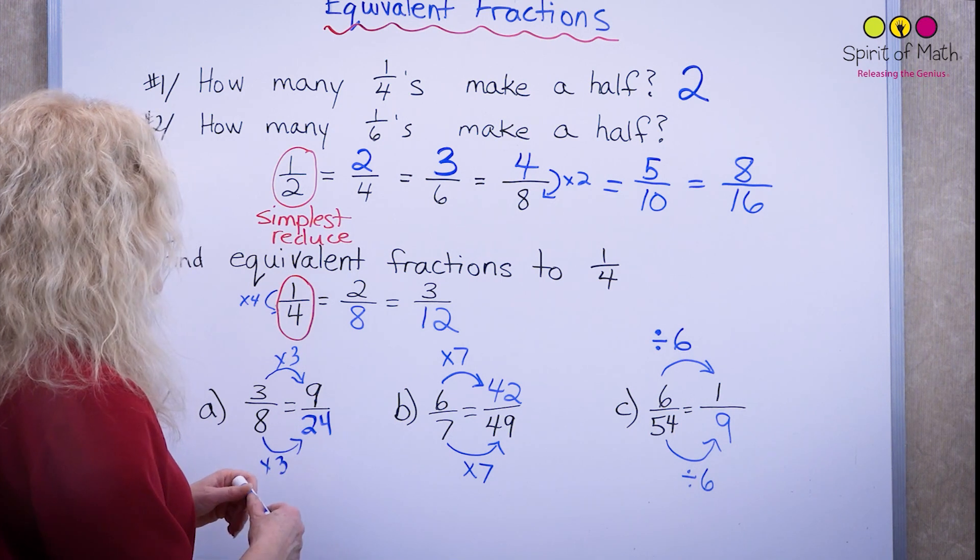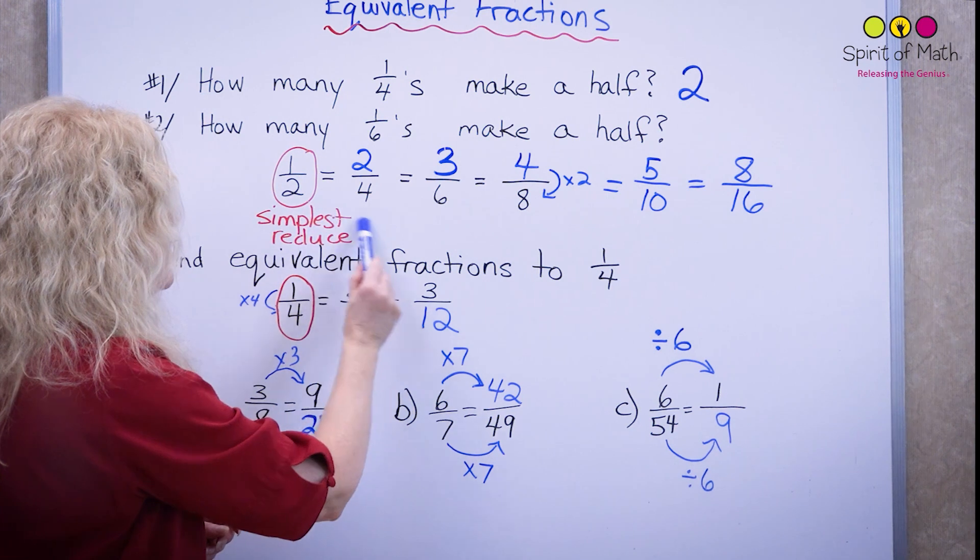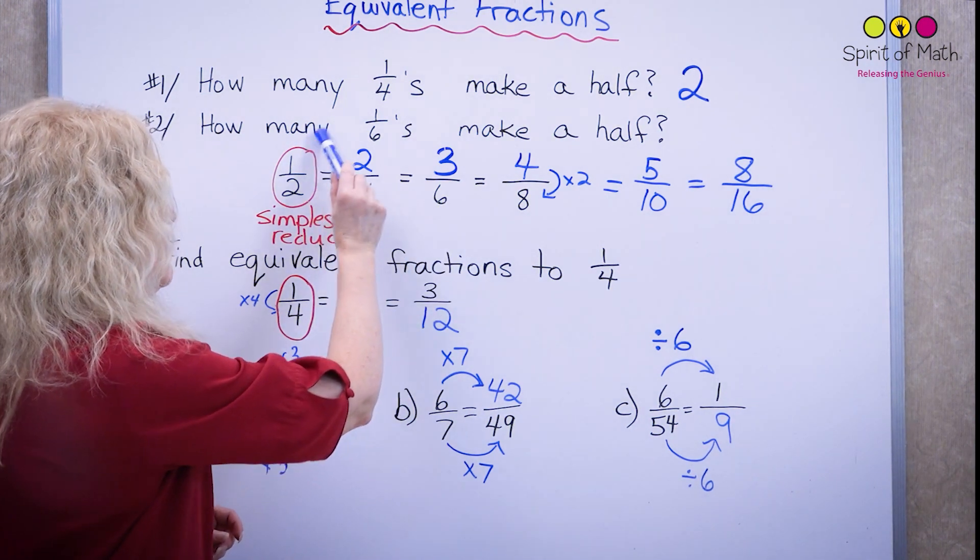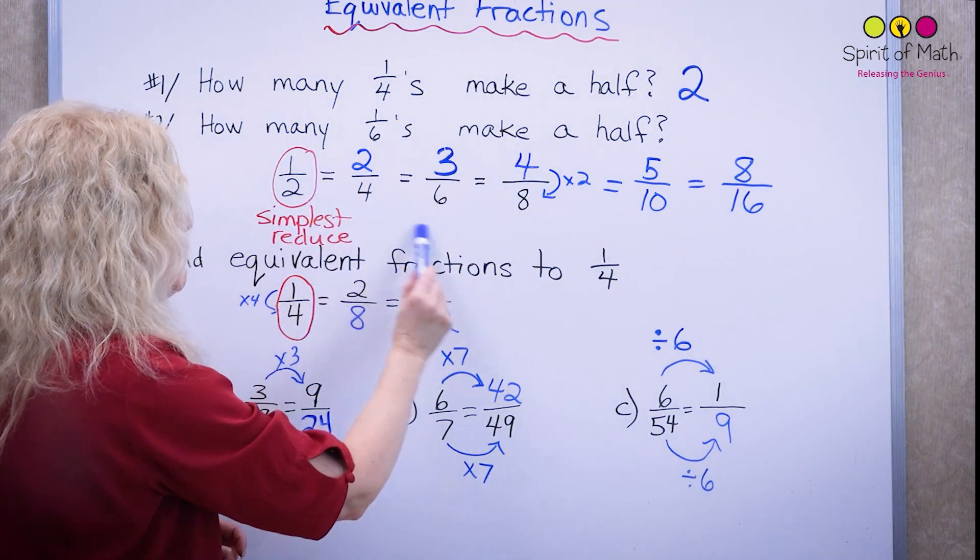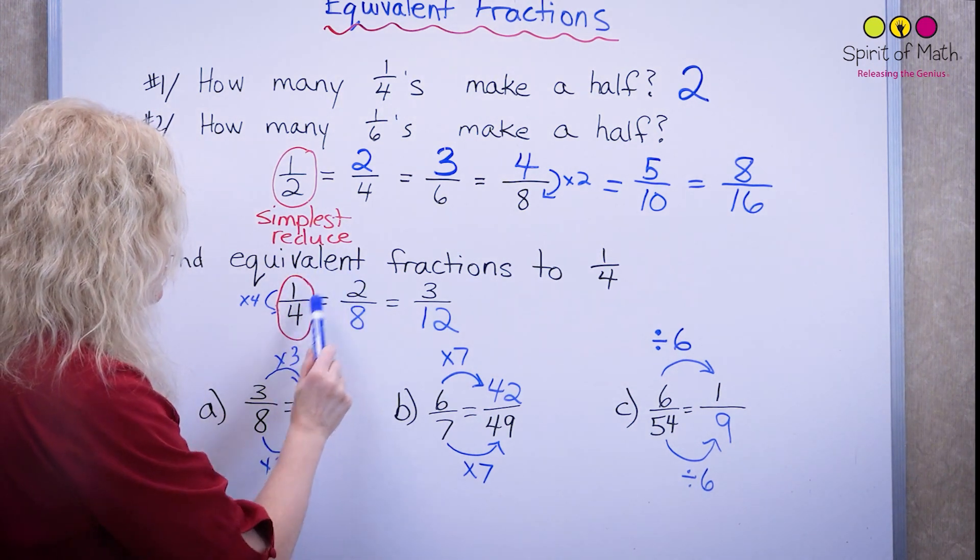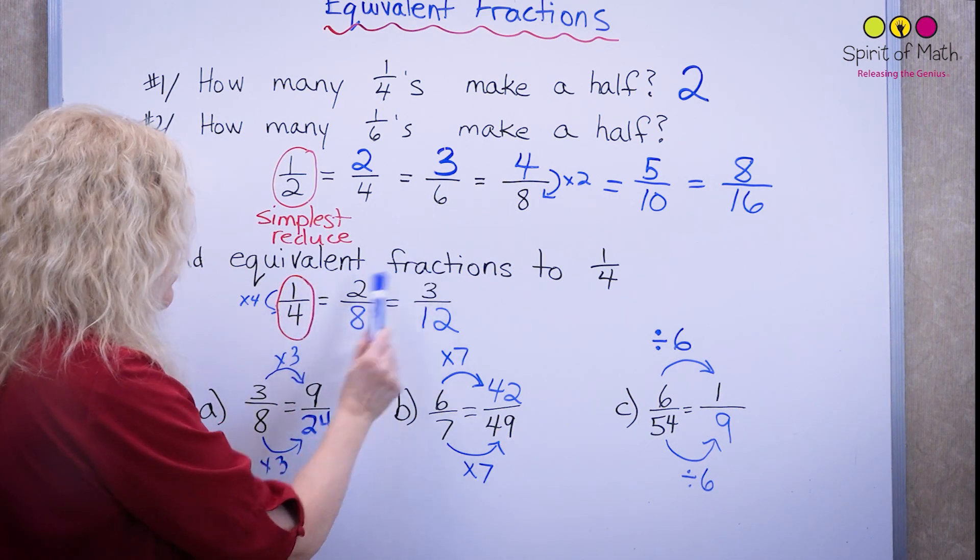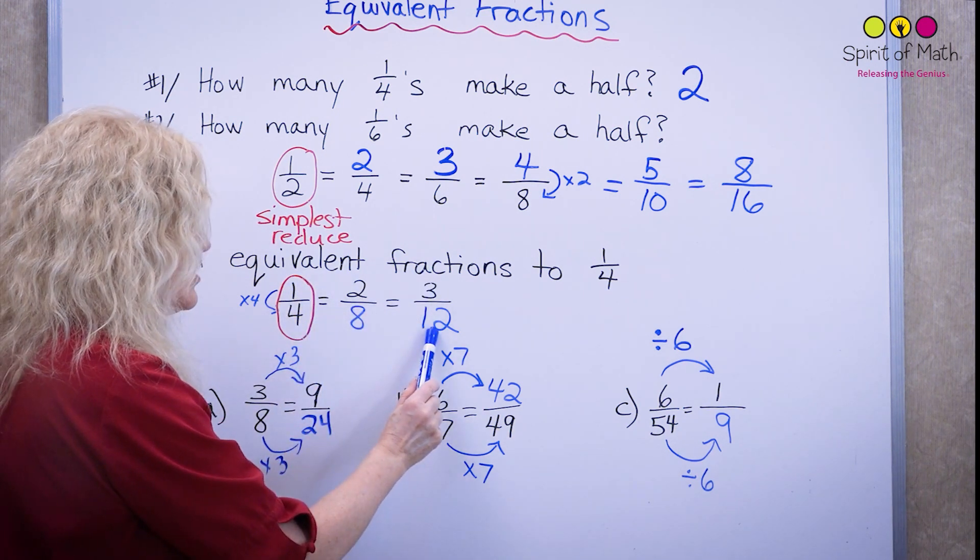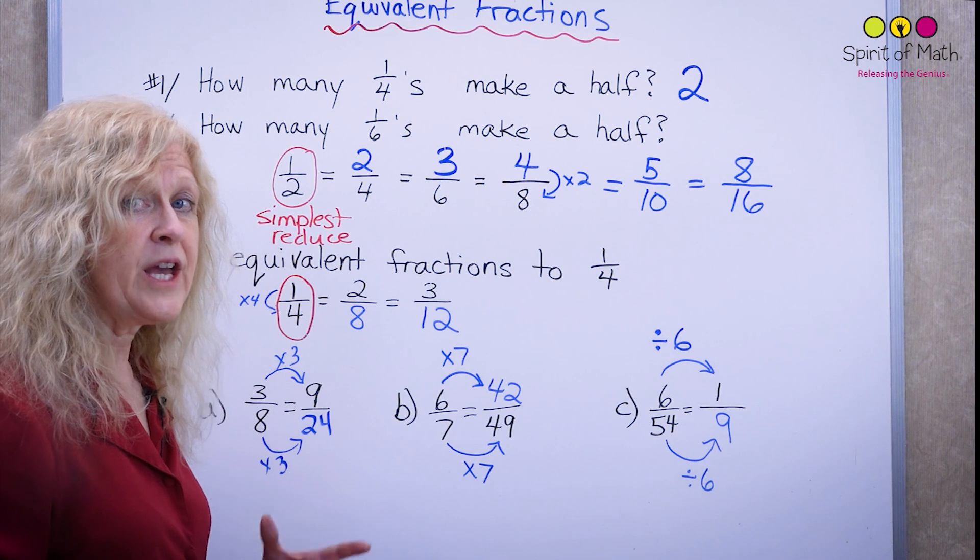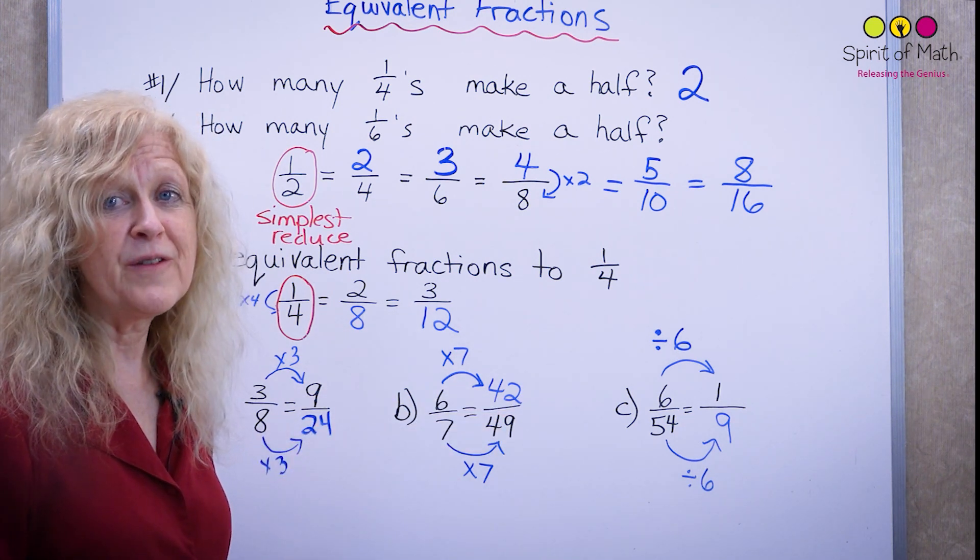Notice that if I said one times three is three, two times three is six. One times four is four, two times four is eight. And here, one times two is two, four times two is eight. One times three is three, four times three is twelve. So you can look at these in many different ways and you will get the equivalent fractions.